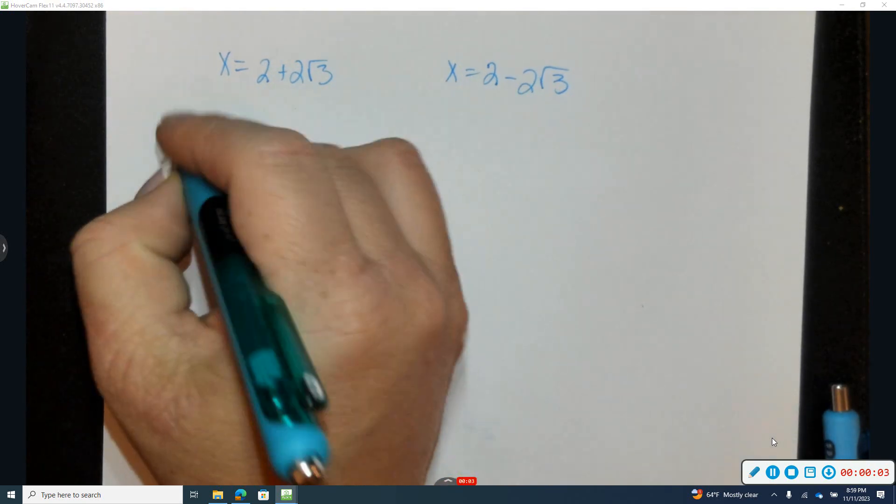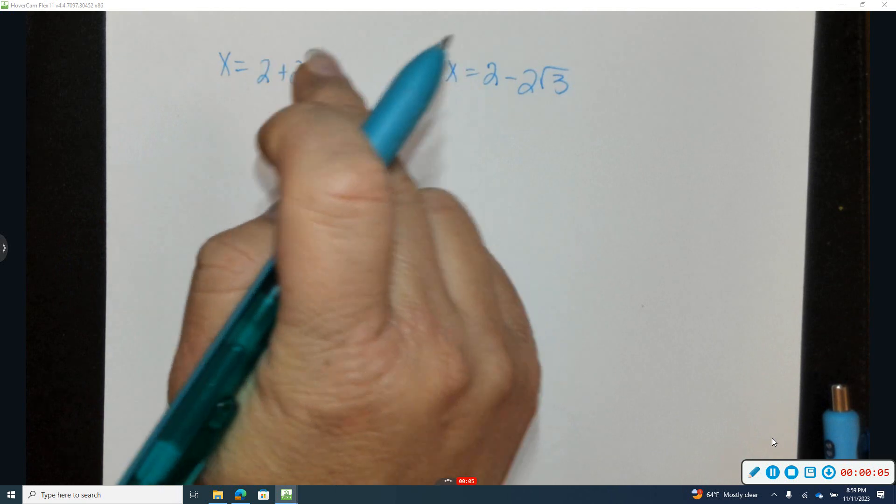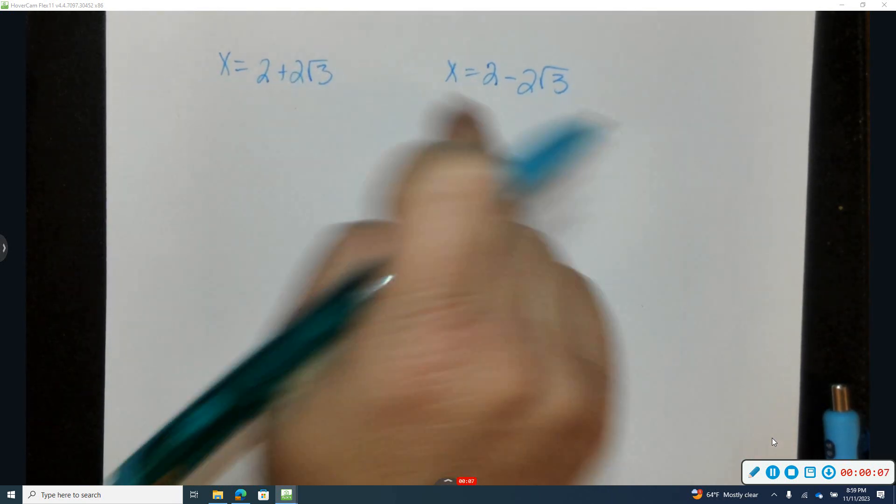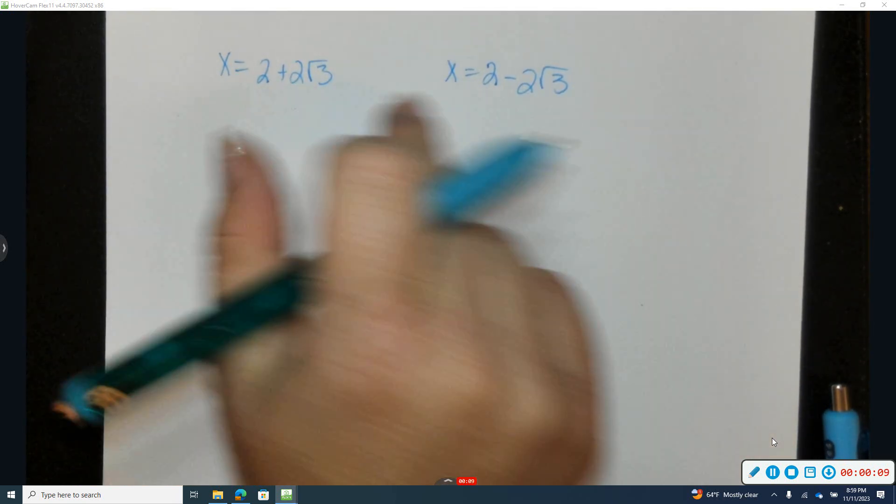Provided the following two roots, let's go ahead and figure out how to come up with a polynomial equation that contains, a polynomial function that contains these two roots.